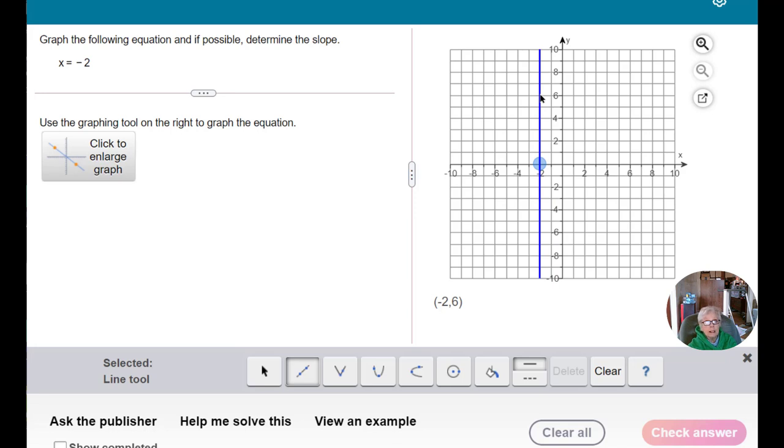Notice that the y coordinates can be anything, anything, any number I want. But x has to remain at negative 2. That's what x equals negative 2 is. A vertical line because x will always equal negative 2. So this is as good a point as any. I guess it's 5, negative 2, 5. I'm going to click. And now I have graphed the line.